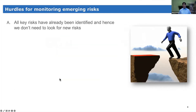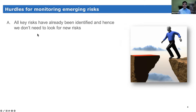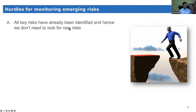In terms of hurdles around monitoring emerging risk, one attitude I've seen in some organizations is: 'We've identified these 120 operational risks, and now we just need to focus on those.' If that is the mentality, nobody is going to look for new risks — maybe there's a 121st or 122nd risk which also needs to be added to the risk register. That's one hurdle I've seen.